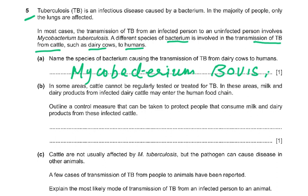In some areas, cattle cannot be regularly tested or treated for TB, and milk and dairy products from infected cattle may enter the human food chain. A control measure to protect people is pasteurizing the milk — or drinking pasteurized milk, or heat treatment of the milk. You can also say use pasteurized milk to make dairy products like yogurt and cheese, or that meat from cattle should be cooked very thoroughly.